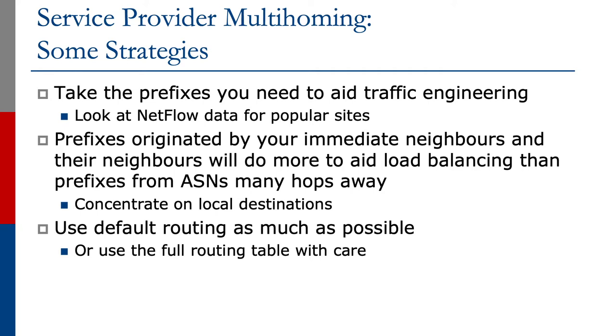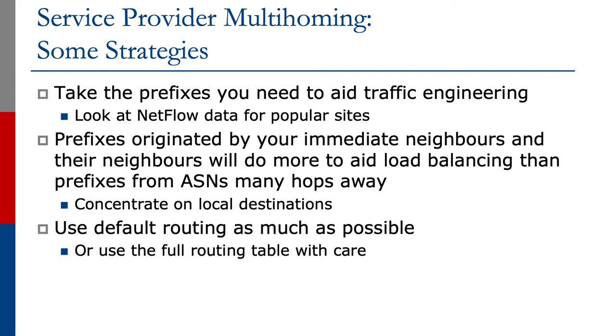Geographical closeness is much more important than destinations on the other side of the planet. There are many autonomous systems between you and those far-away destinations, and the interconnectivity between those autonomous systems is changing all the time, whether by design or by accident. So concentrate on local destinations. We're also going to use default routing as much as possible — if the destination doesn't matter to us, why carry the prefix for it? Let's rely on our upstream provider; if we don't know how to get to it, let them work that out.